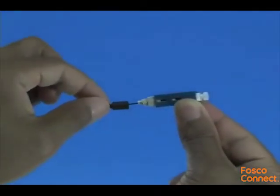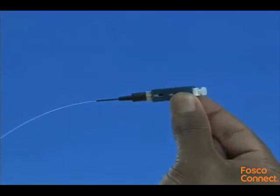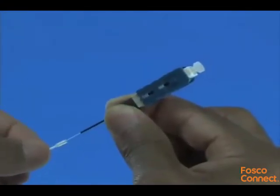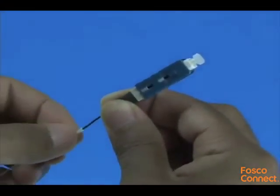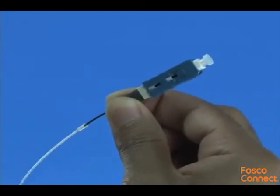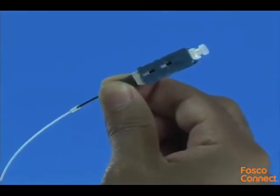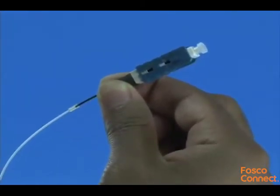Slide the 900 micron boot onto the connector. Slide the clear protective tube toward the connector and attach it to the 250 micron protective tube. Termination is now complete.